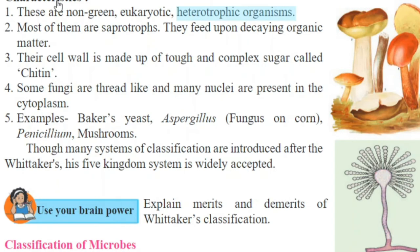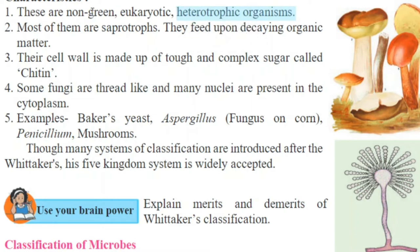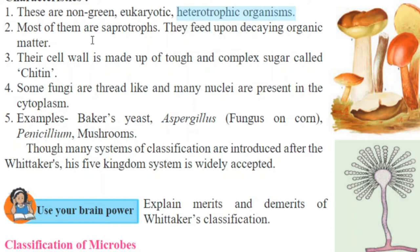If we discuss the characteristics of fungi: first, these are non-green, eukaryotic, heterotrophic organisms. Non-green means chloroplast or chlorophyll is absent, which means photosynthesis does not occur. Eukaryotic in nature. Heterotrophic means they depend upon other things for their food. Most of them are saprotrophs. Saprotrophs or saprophytes — both are the same. They feed upon decaying organic matter. Such organisms are called saprotrophs or saprophytes.